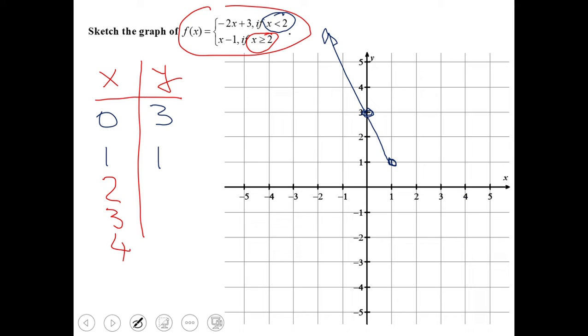Let's go to the bottom one, the red one. Now I'm going to plug in 2: 2 minus 1 equals 1, so we have the point 2 and 1. We plug in 3: 3 minus 1 is 2, so we have 3 and 2. The last one is 4, and 4 minus 1 is 3, so we have the third point.